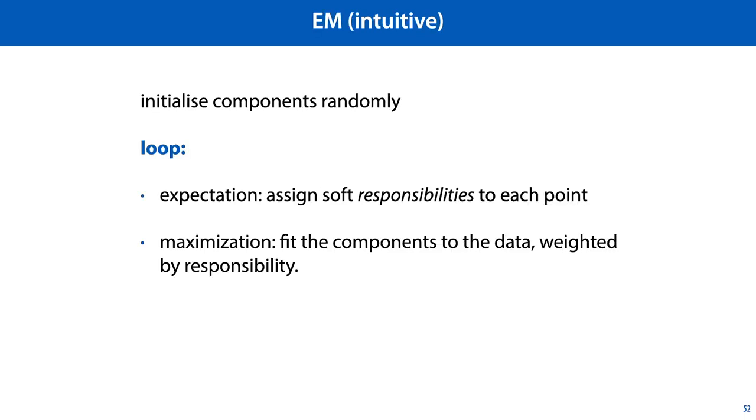Which leads us directly to the EM algorithm for Gaussian mixture models. We initialize the components randomly, and we enter a loop consisting of two phases. In the expectation phase, we assign soft responsibilities to each point, which means each component takes partial responsibility for having generated each point. And after that, we enter the maximization phase, where we fit the components to the data, weighted by their responsibility.